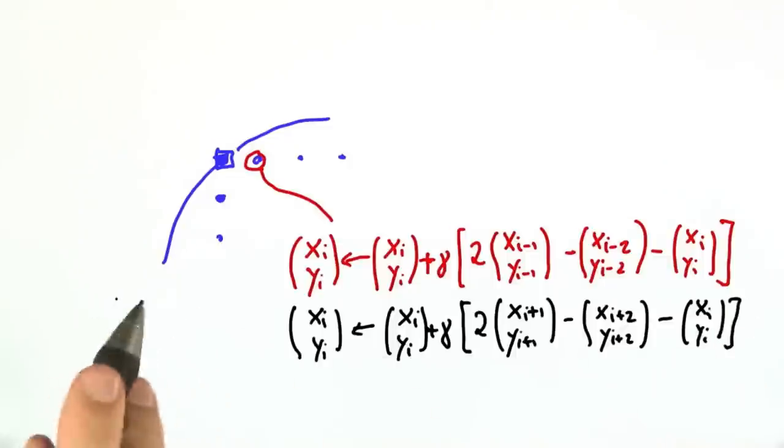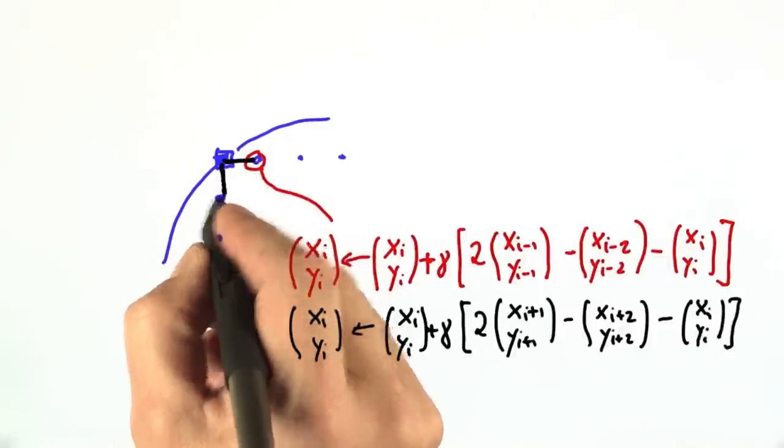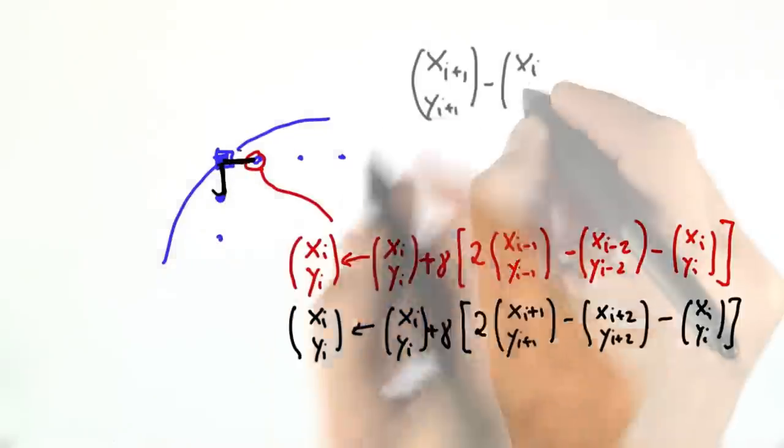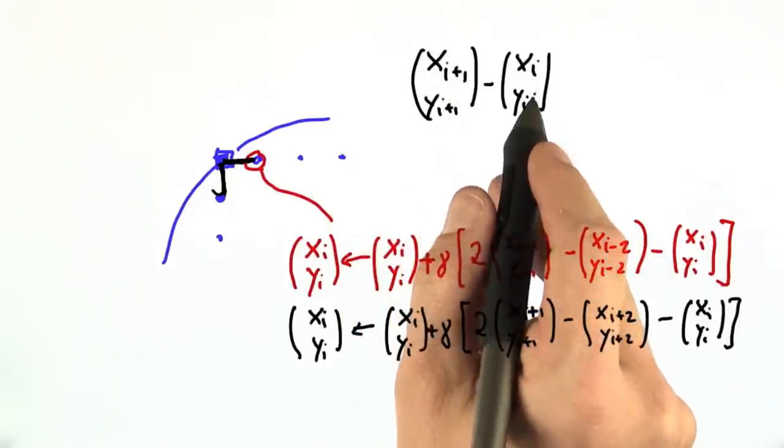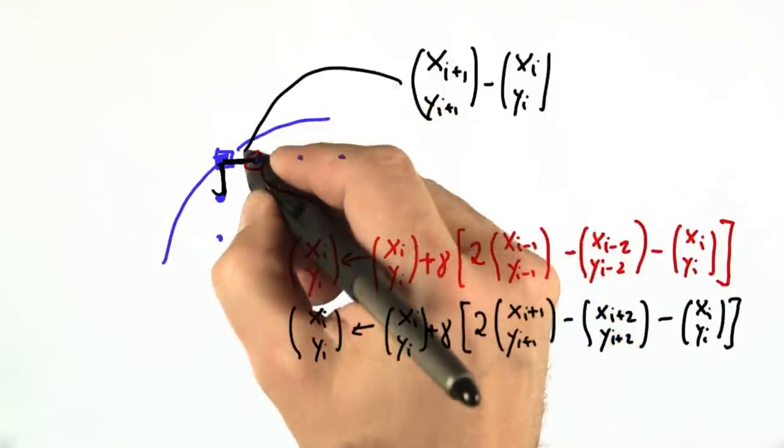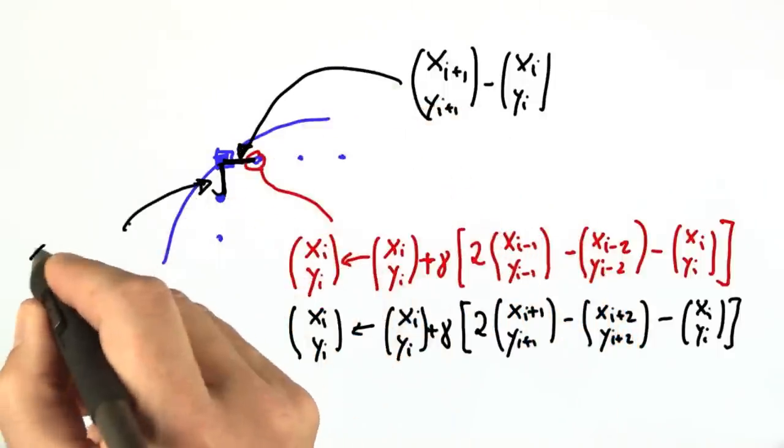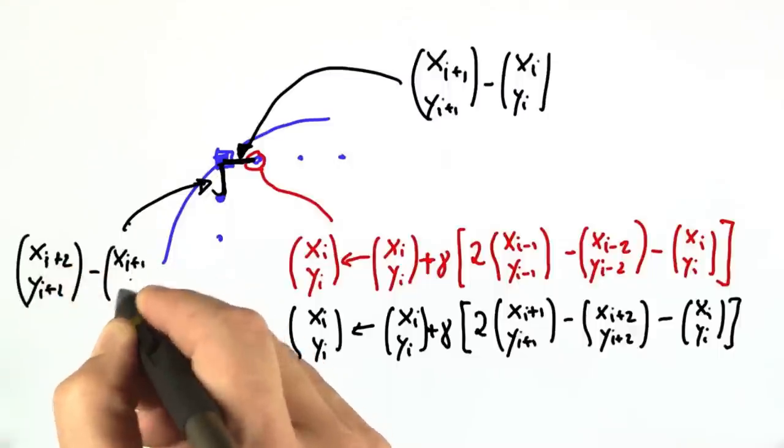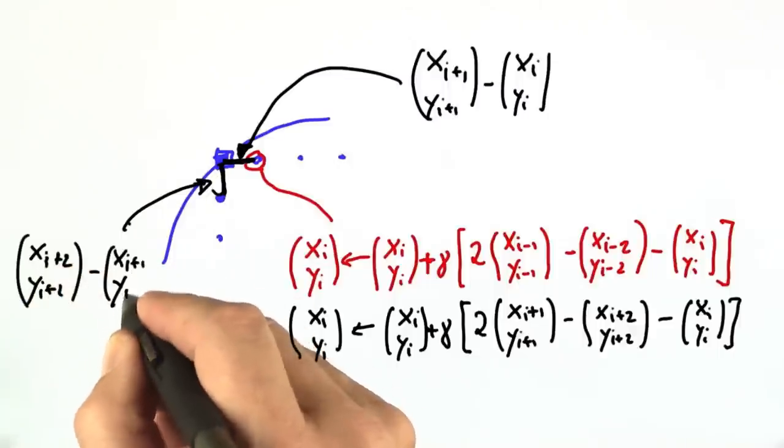And behind this is a certain desire. We want the vector over here to be the same as the vector over here. This vector is this difference over here, of xi plus 1 over yi plus 1 minus xi over yi. That's this vector over here. And the vector over here is similarly the difference of the point i plus 2 minus the same for i plus 1.